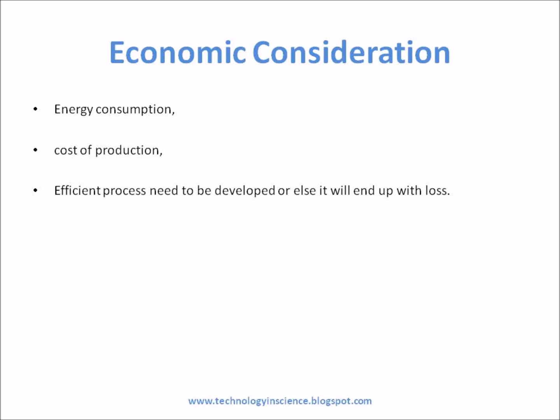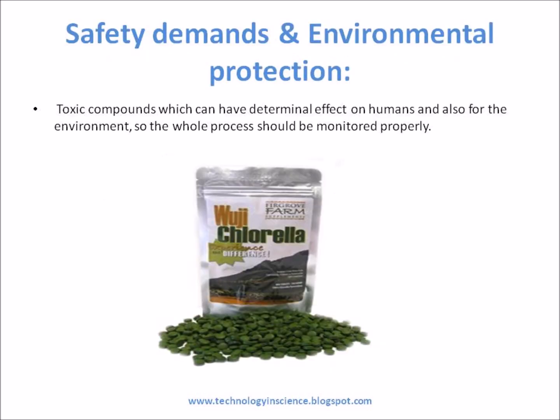Economic factors such as energy consumption and cost of production are important considerations for large-scale production. These need to be thoroughly analyzed and an energy-efficient process must be developed, or else it will result in a loss. Since SCP is produced for human consumption or for feeding animals, the safety of the product must be tested, as certain microbes produce toxic compounds that can have detrimental effects on humans and the environment, so the whole process should be monitored properly.